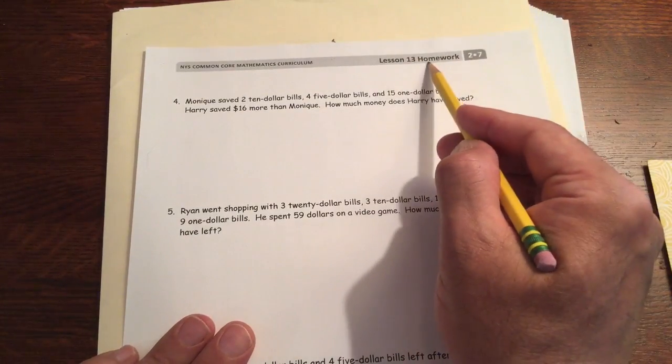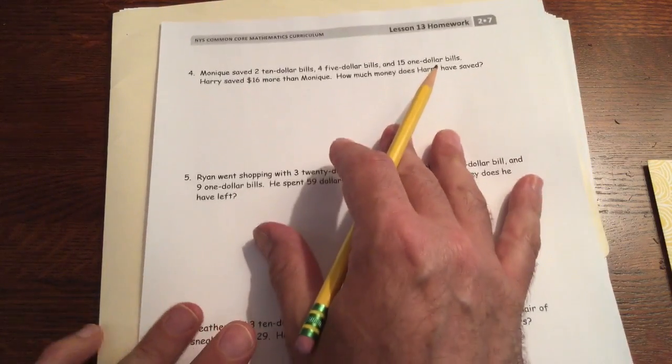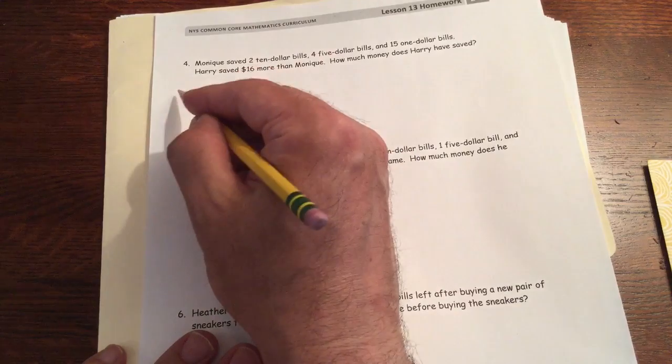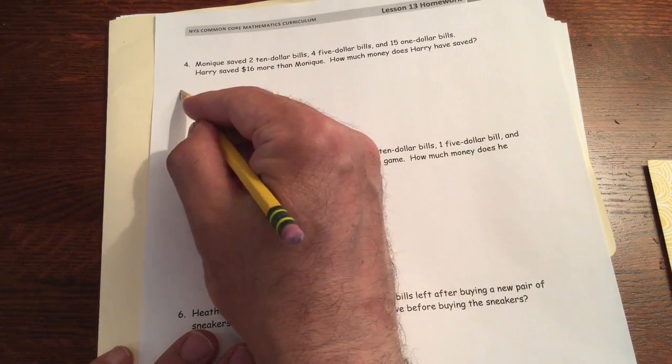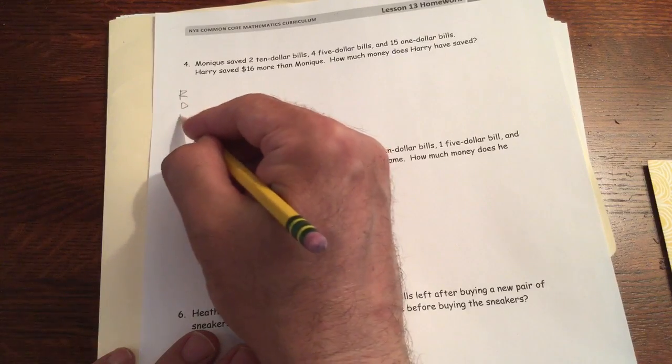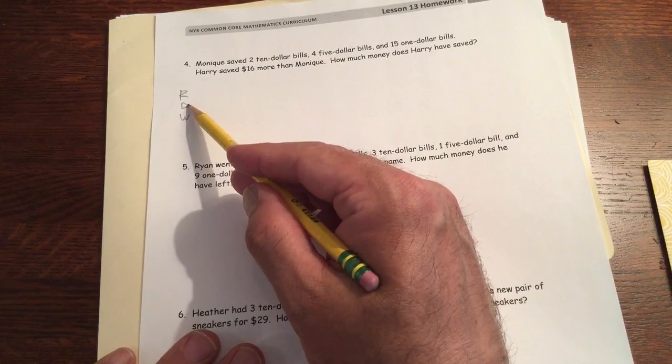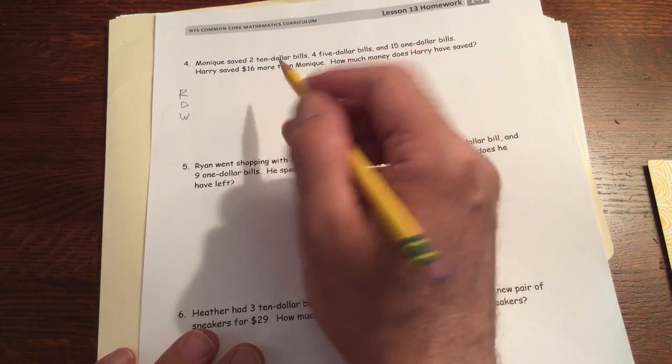This is page 2 of Lesson 13 Homework, Module 7 of Grade 2. Really have to draw pictures for these, especially for word problems, R, D, W. We're going to draw a picture of the information first. That's the drawing, and then we'll figure out what equations we need to write and how to solve it as we go.